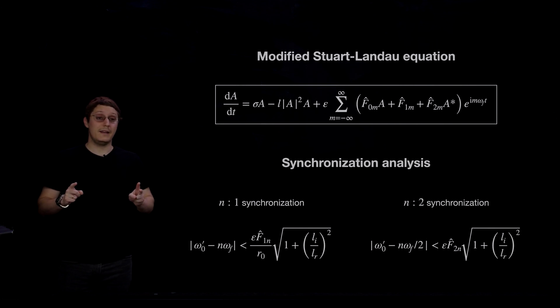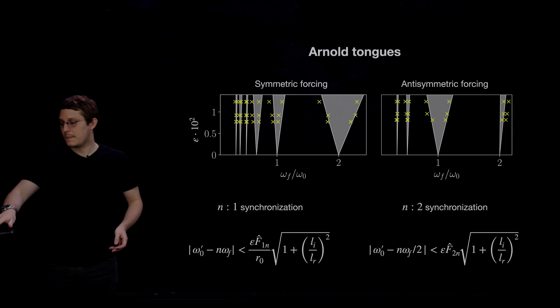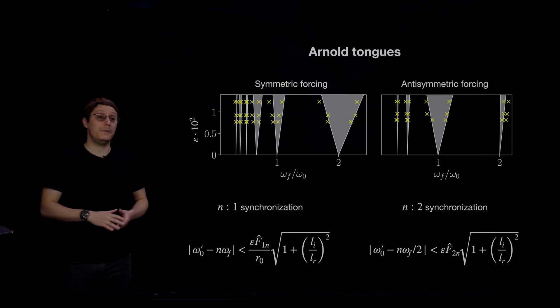what we call n-to-1 synchronization and n-to-2 synchronization. Meaning that n, where n is any integer, n cycles of the oscillator flow take place for every one or two cycles of the forcing. And these expressions are parameterized by the model coefficients and can be used to delimit what are known as the Arnold tongues of the system.